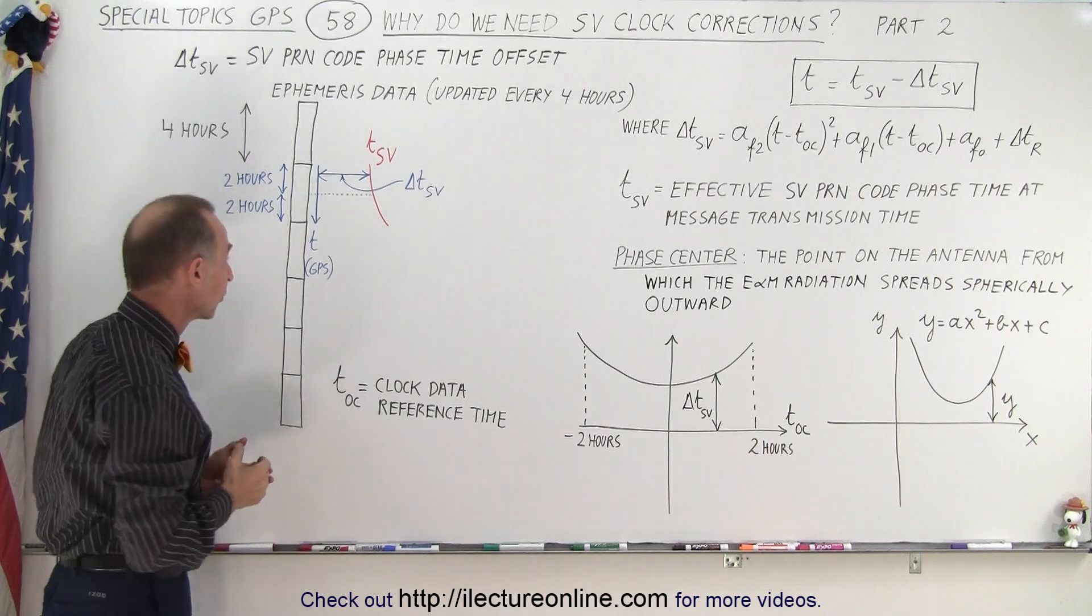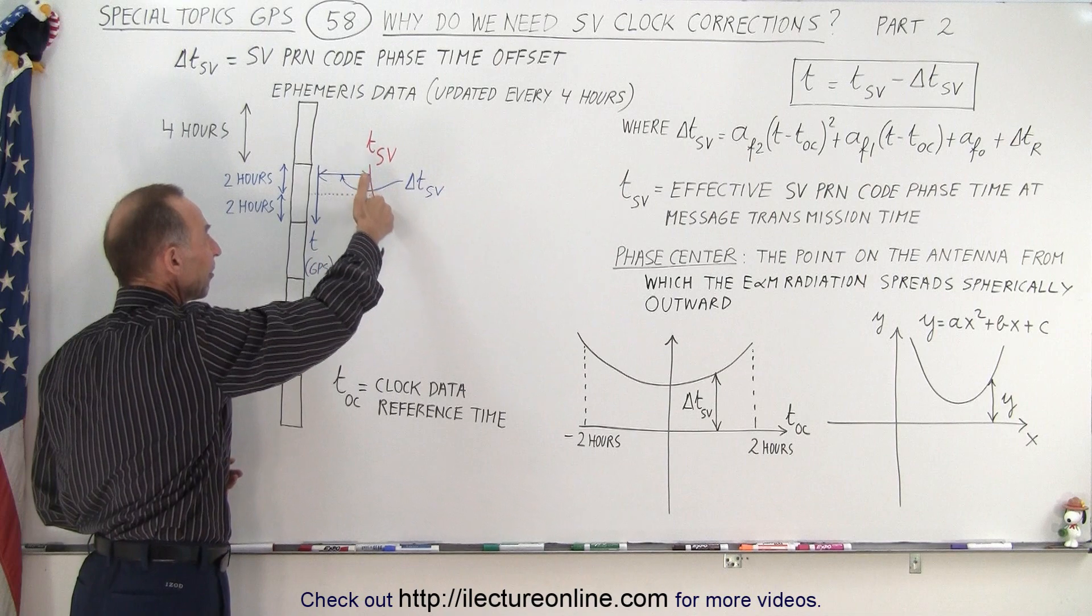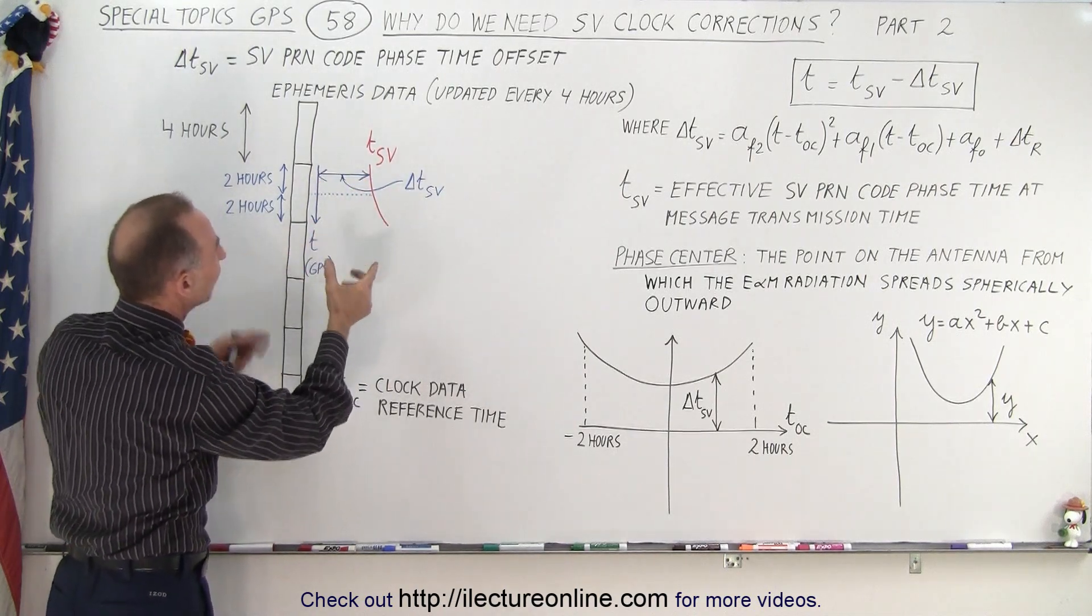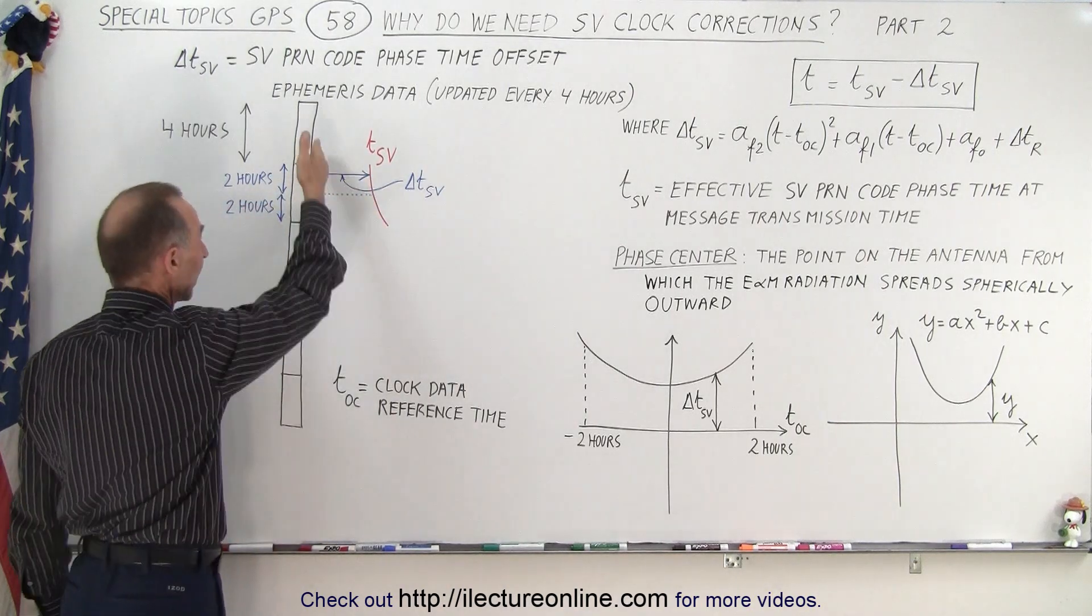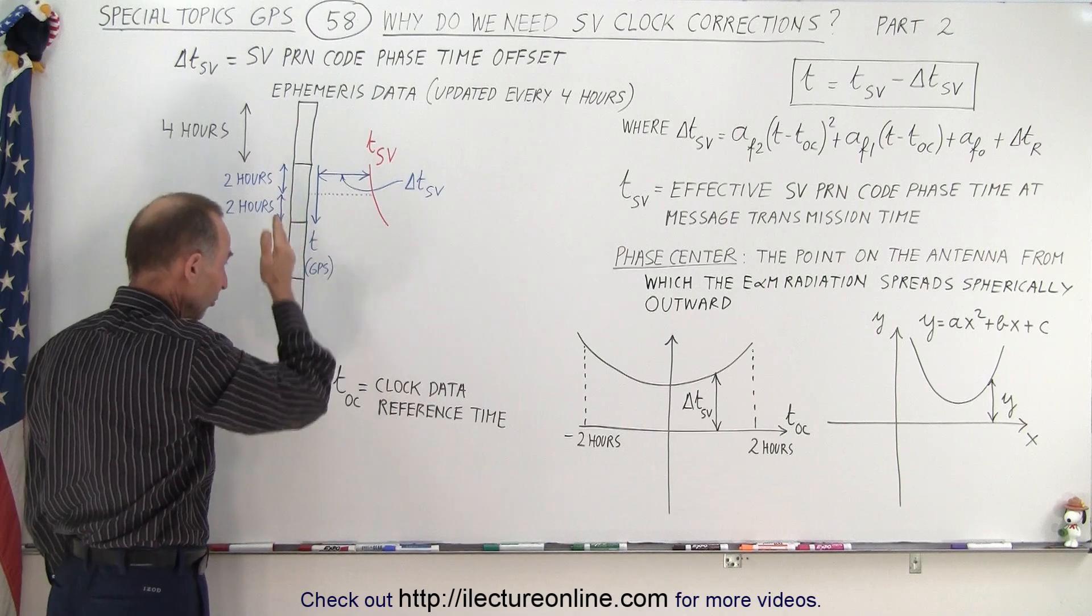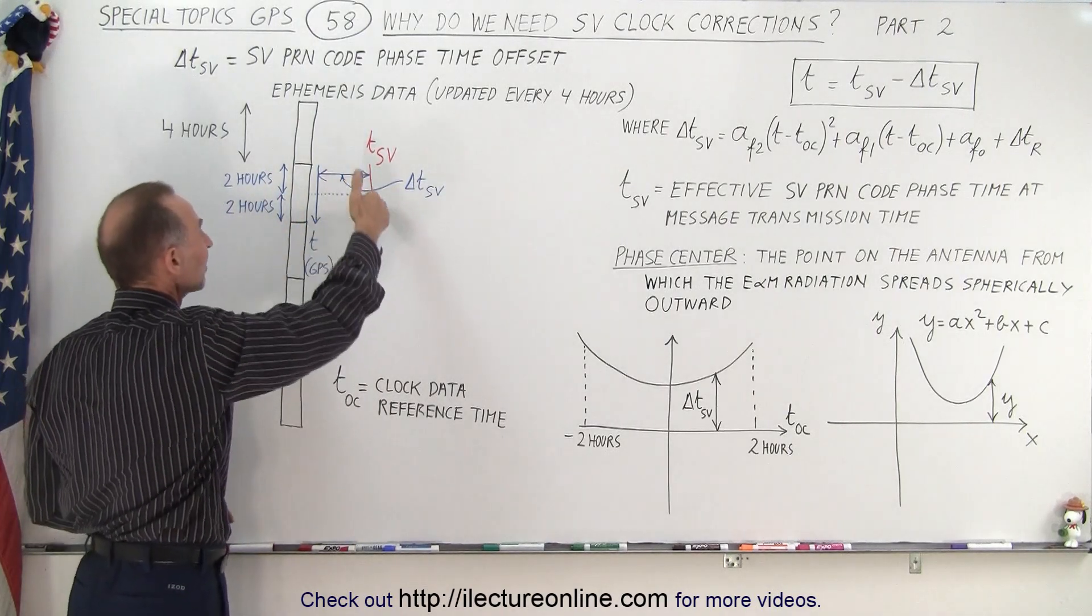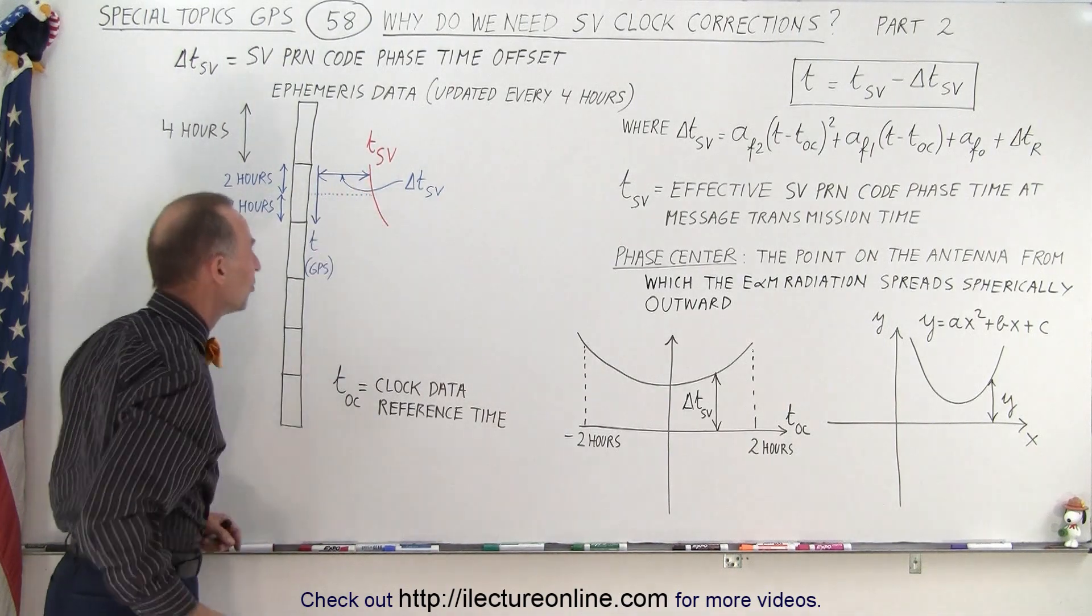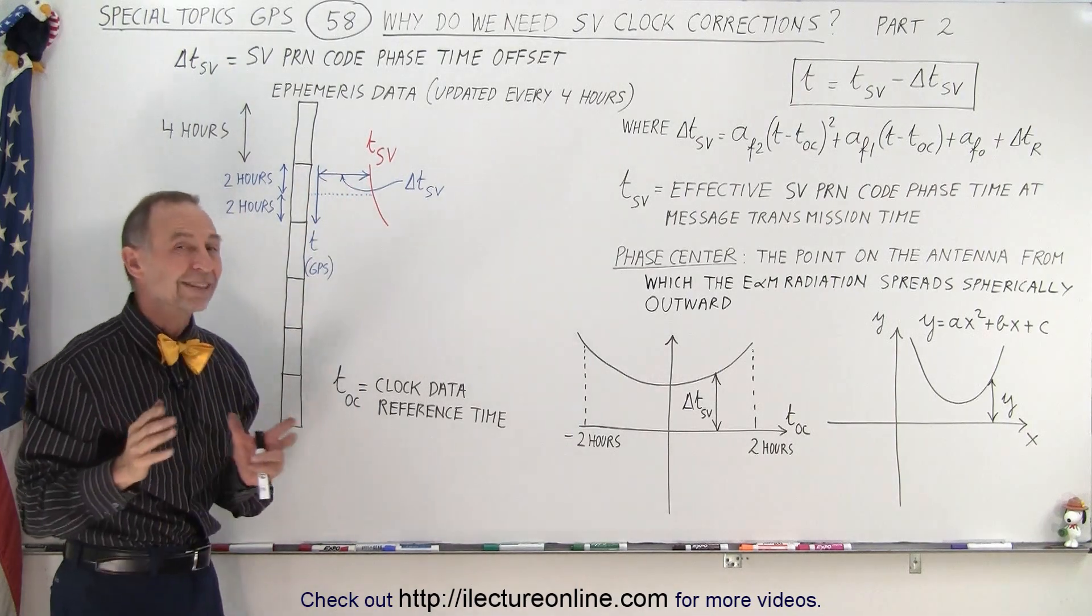And then we have the SV time which over time varies from the GPS time. So graphically I've represented the delta SV by the distance between those two lines: one line that's straight GPS time which just keeps going continuously at the same rate, and then we have the SV time which varies in the rate at which it runs relative to GPS time. And so the difference between them continuously changes.